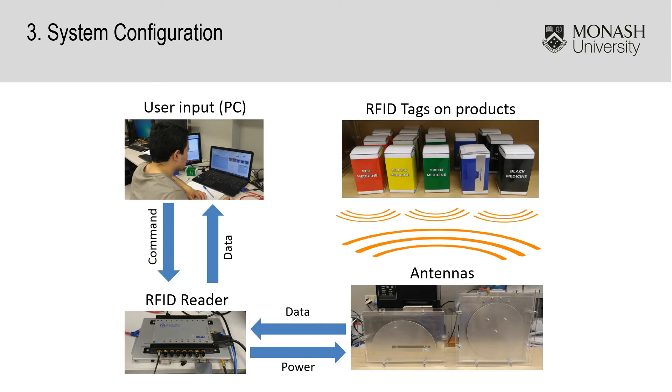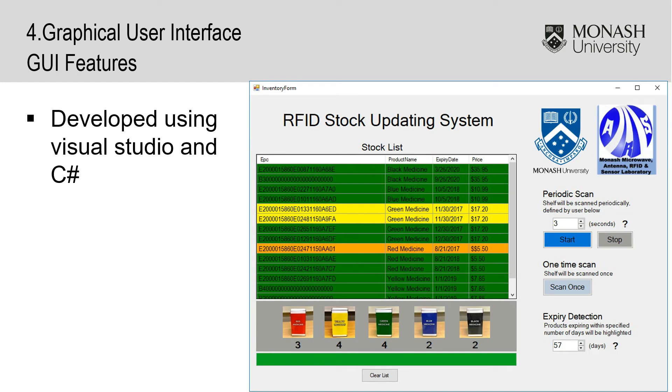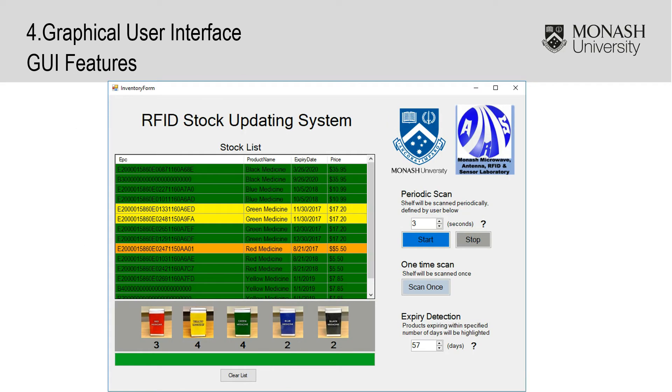This is a summary of the system configuration. This is the graphical user interface that the user can use to control the RFID system. For the development of the GUI, Visual Studio and the C Sharp language were used due to the fact that the CS468 reader had available C Sharp API libraries. The GUI can be separated into two main components.